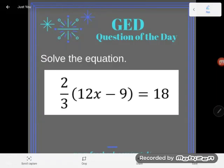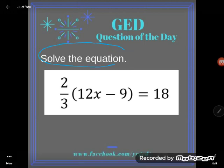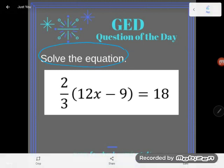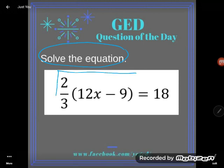Hey GED students, it's GED question of the day time and we've got a multi-step equation to solve here. A couple ways I can tell, first of all the directions say solve the equation, so hey I love the obvious, but I can also see that it's an equation because I have these two different expressions that are equivalent to each other.